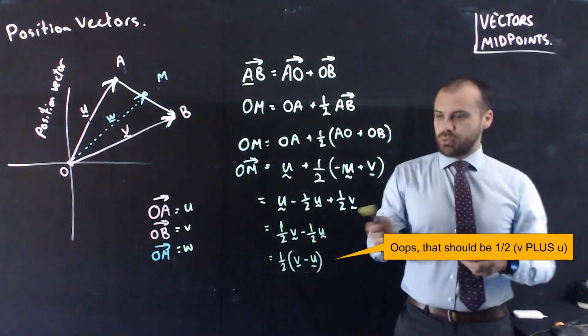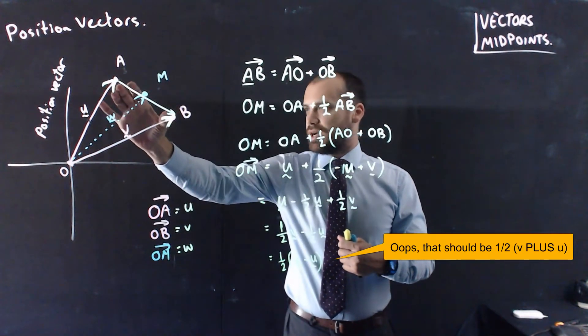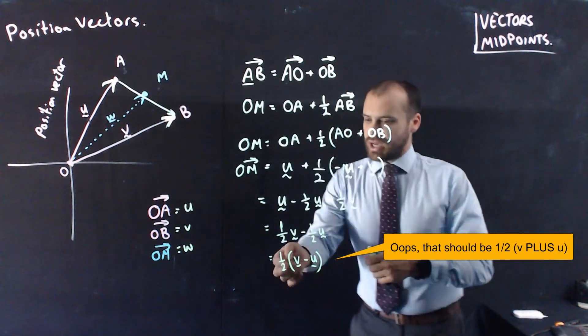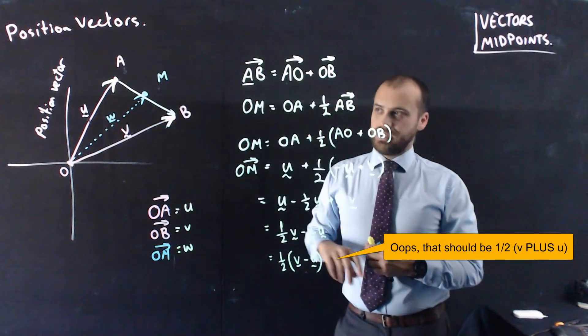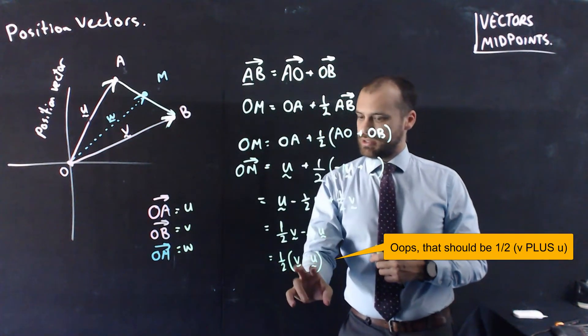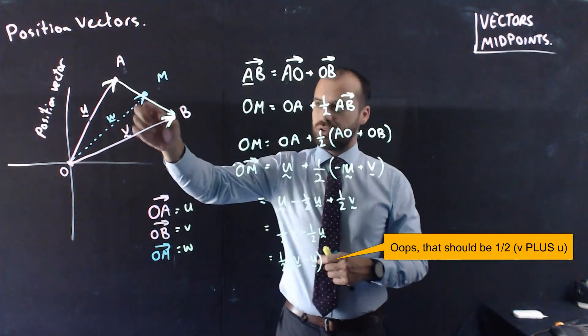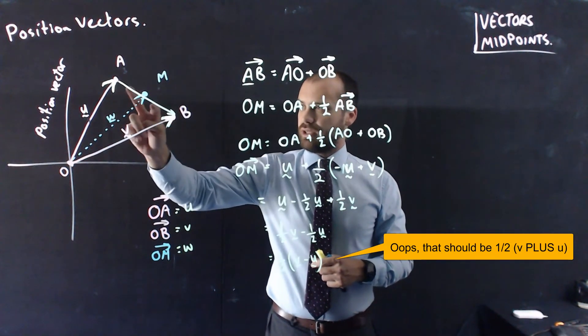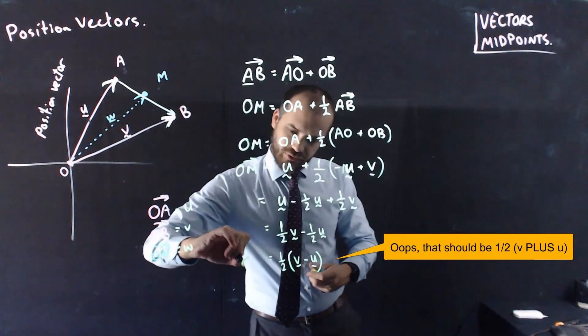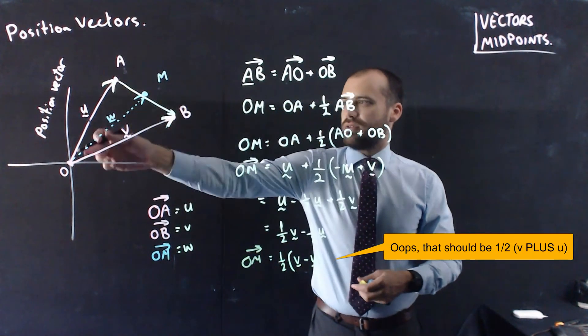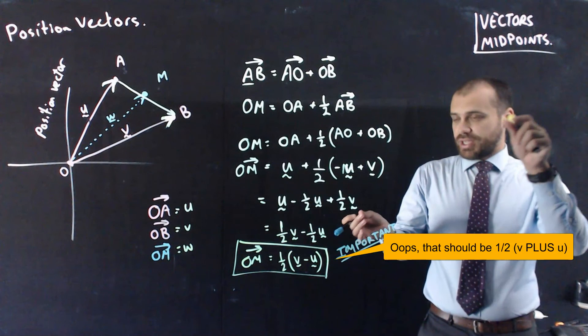Okay, so if you want to find the midpoint formula, the midpoint vector, which is this blue line that cuts two other vectors, it's just half of one vector added to the other. Now, it actually doesn't matter which vector comes first there. So, if you want to know the midpoint vector, it's half of the other position vectors around it. And I think that's it. Make sure you've got this formula for your vector midpoint done.